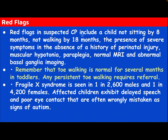Red flag in suspected cerebral palsy includes: a child not sitting by eight months, not walking by 18 months, and the presence of severe symptoms in the absence of a history of perinatal injury, muscular hypotonia, paraplegia, normal MRI, and abnormal basal ganglia imaging. Remember that toe walking is normal for several months in toddlers; any persistent toe walking requires referral. Fragile X syndrome is seen in 1 in 2,600 males and 1 in 4,200 females. Affected children exhibit delayed speech and poor eye contact that are often wrongly mistaken as signs of autism.